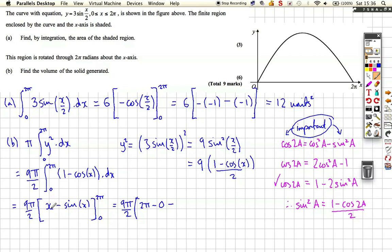If we put 0 in here we get 0, and then minus minus which is plus, but it's 0 anyway so it doesn't matter. We've just substituted our limits in and that leaves us with - well, 2 and 2 are going to cancel - 9π² units cubed for our volume.